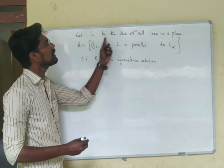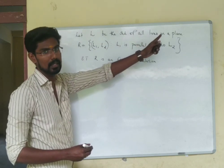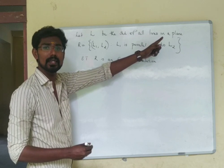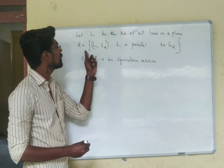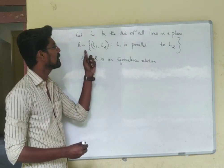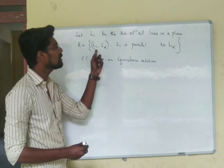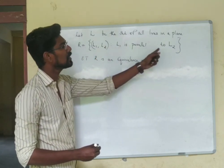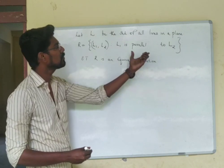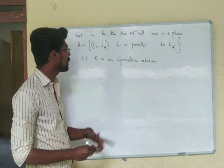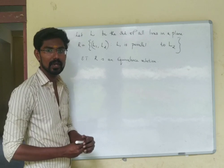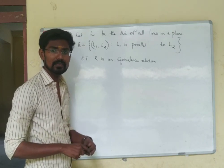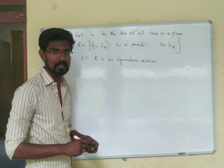Next question: Let L be the set of all lines in a plane. R is defined as the set of all (L1, L2) such that L1 is parallel to L2. We need to show that R is an equivalence relation. An equivalence relation requires R to be reflexive, symmetric, and transitive.